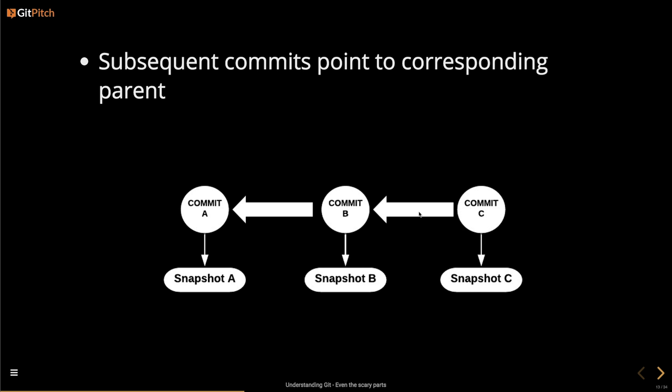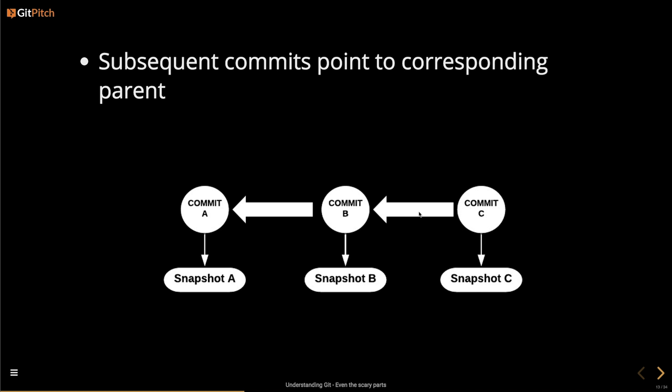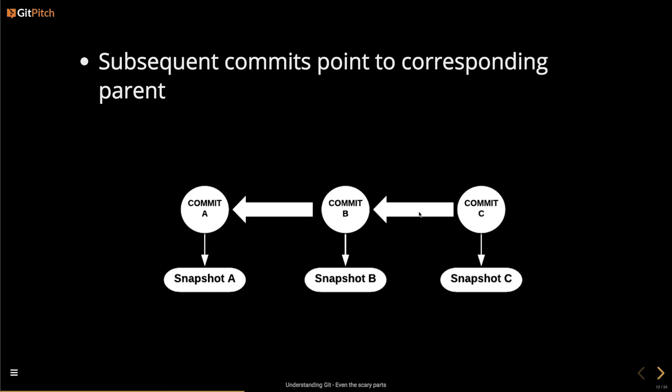Subsequent commits point to the parents. So commit A was the first commit, then commit B, then commit C. That snapshot there is basically the tree object — the tree object is taking a snapshot of a certain version of your repository. This is the main thing you need to know about in terms of storage. You can go into super detailed computer science stuff, and I've got references for all of that at the end, but for the purpose of this talk, this is enough.